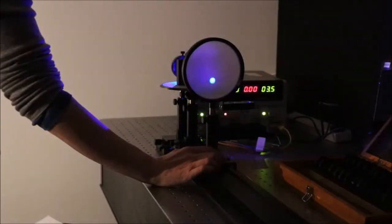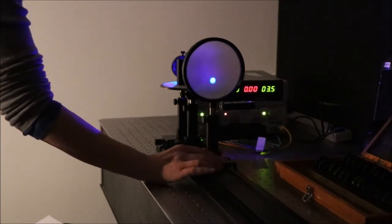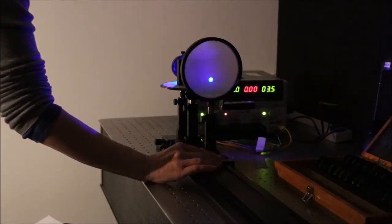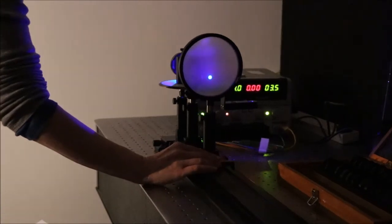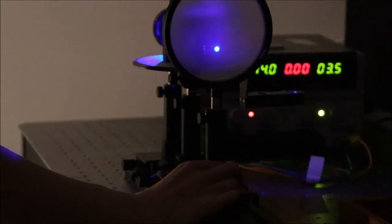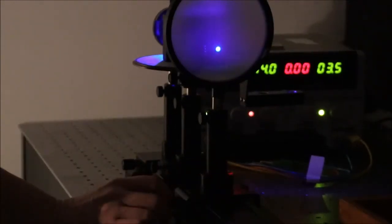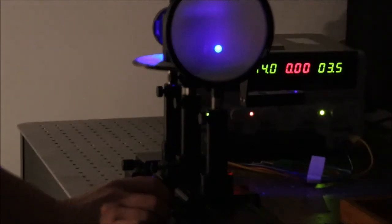Insert a ground glass screen into an X carrier and place it so you can find a focused image of the LED. You should be able to see a clear outline of the LED die.